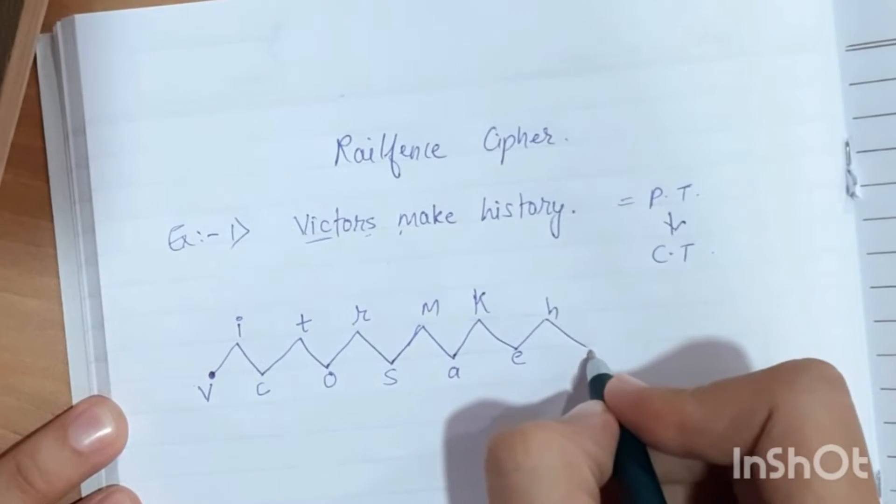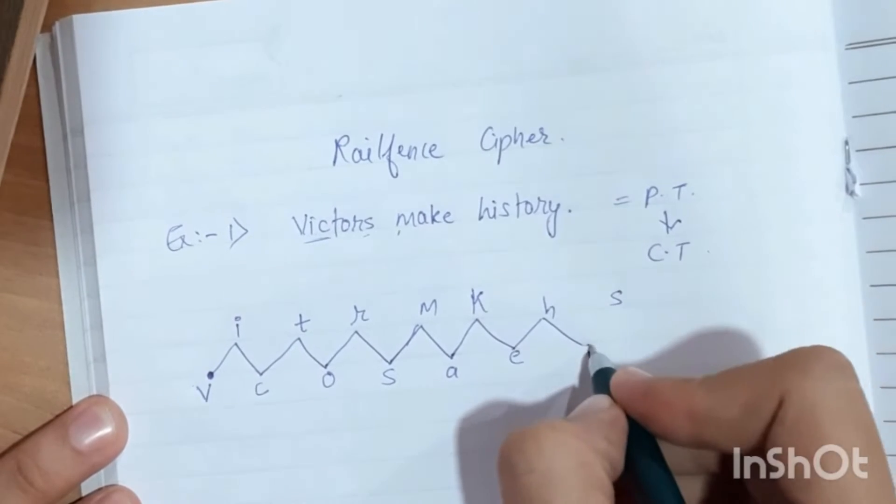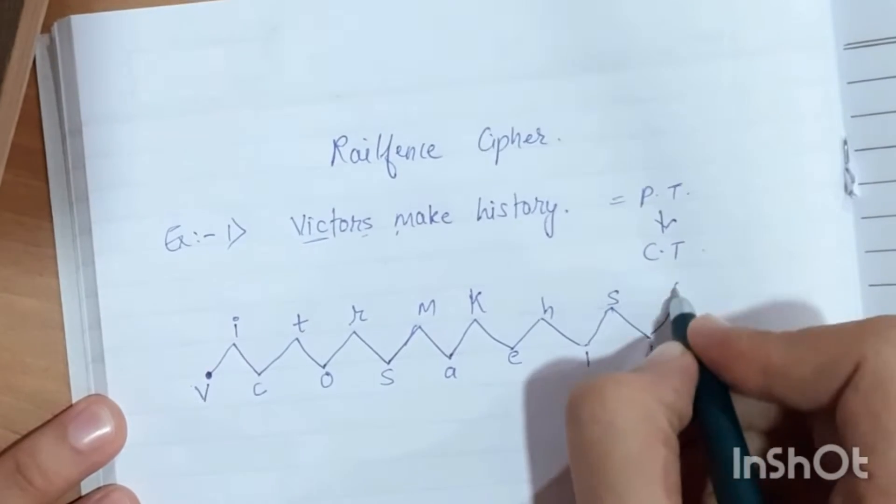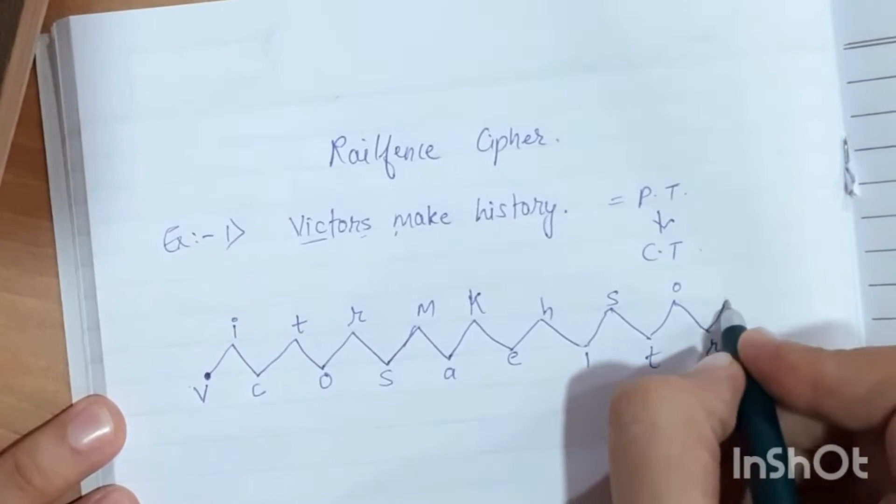Then we continue. The word history is H, I, S, T, O, R, and Y. Where you end, you stop.